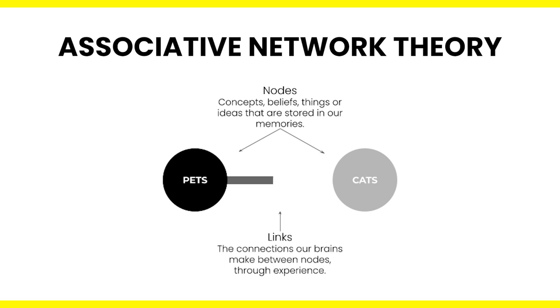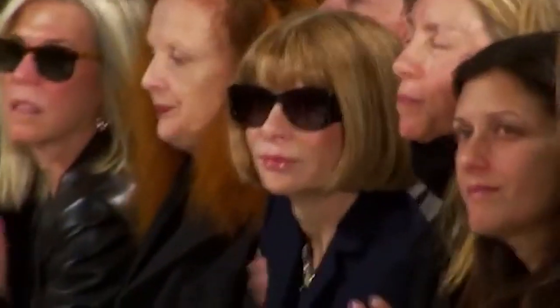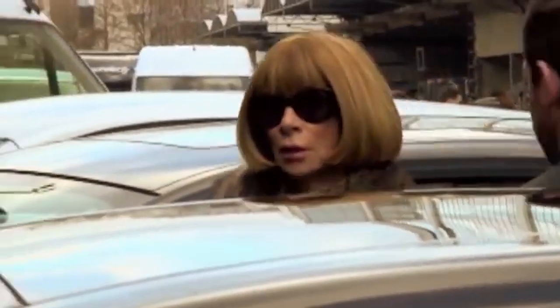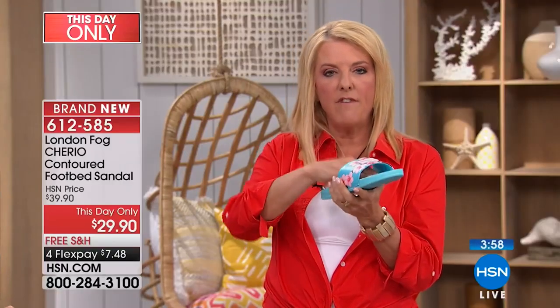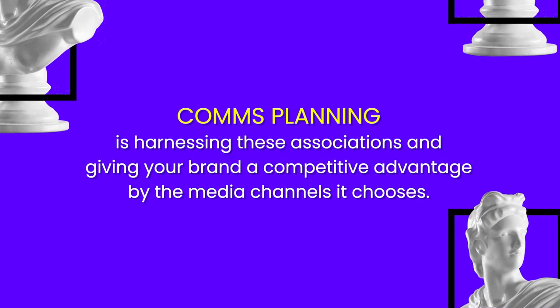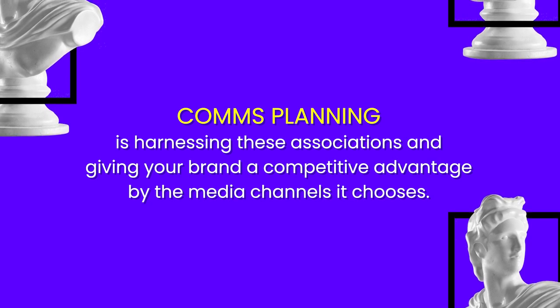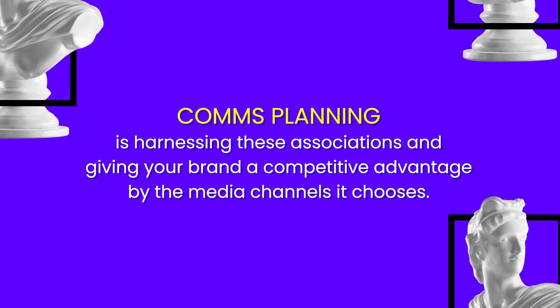If we look at how advertising works from the associative network theory, it suggests that we have associations in our head and everything connects with those associations. So when we see something advertised in Vogue magazine we associate it with high fashion and being expensive, whereas if we see a product advertised on shopping TV our associations might be cheap or on special. We create these associations with the media channels that are used and the moments when they're advertised. Comms planning is harnessing these associations and giving your brand a competitive advantage by the media channels it chooses.